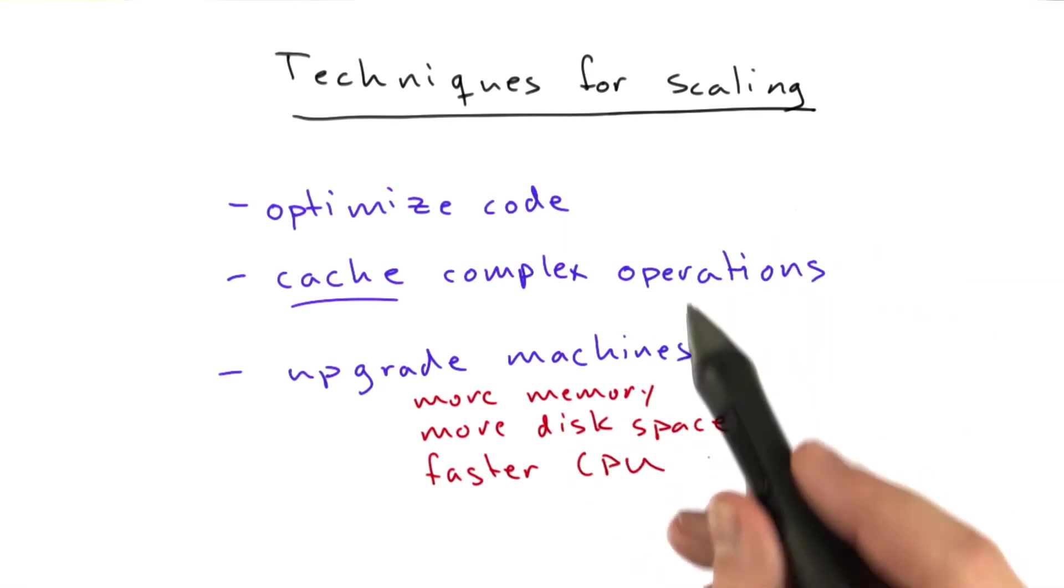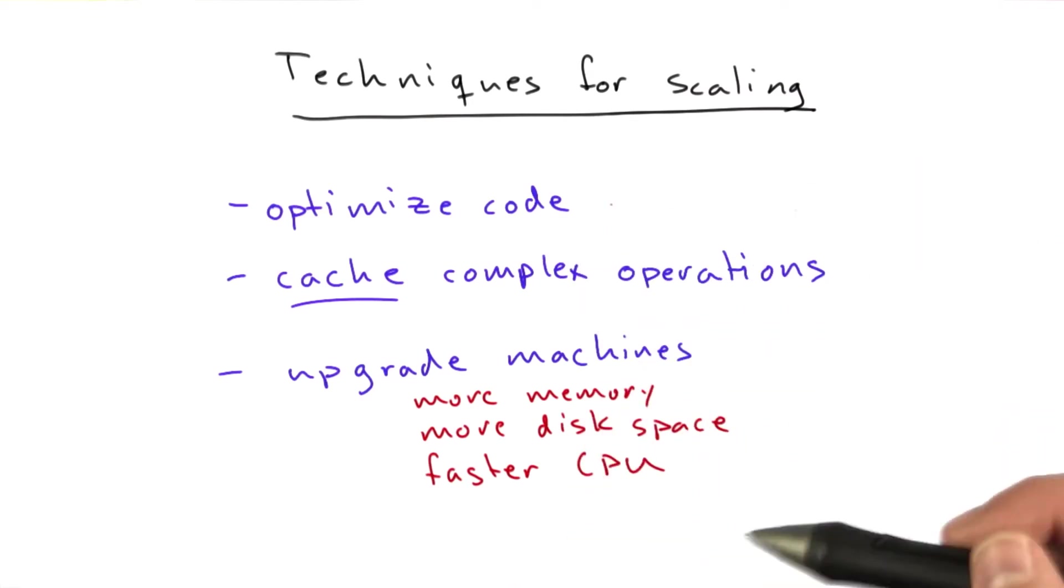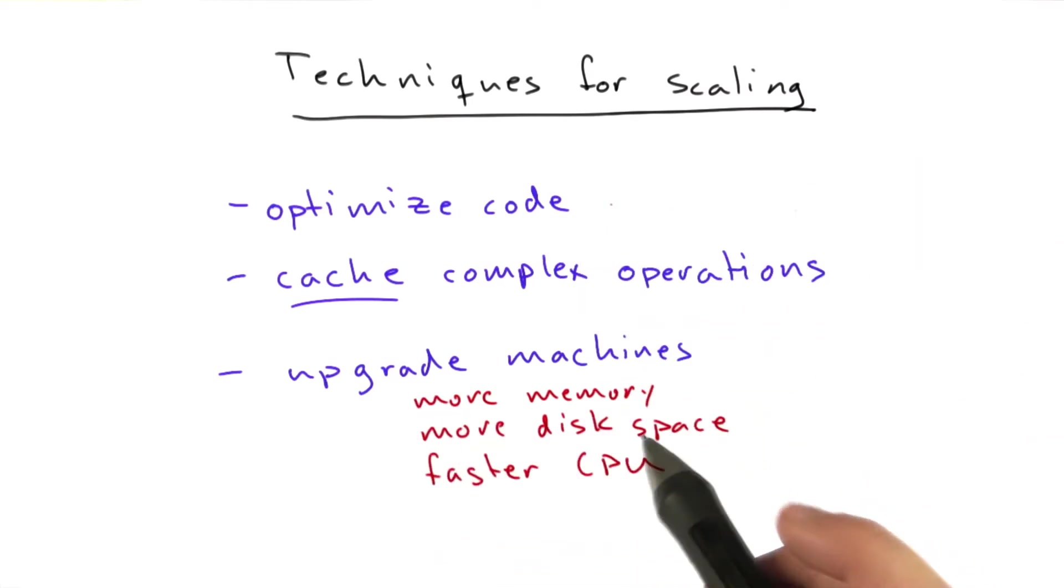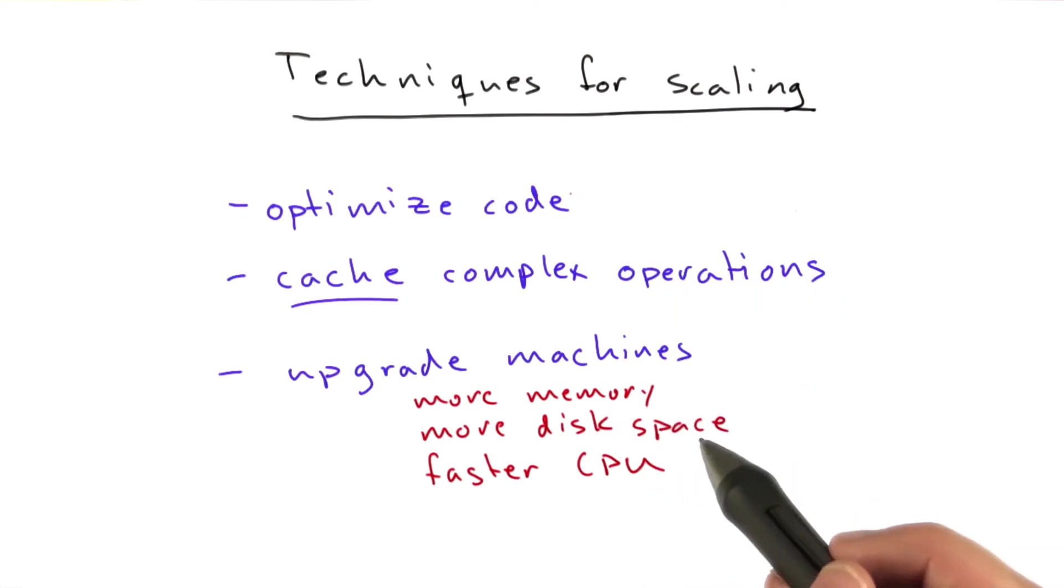So just like you're doing the trade-off with code optimization versus adding more machines, you have the same trade-off here. Do we want to optimize our code, or do we just want to get a faster computer?